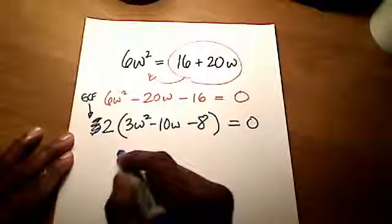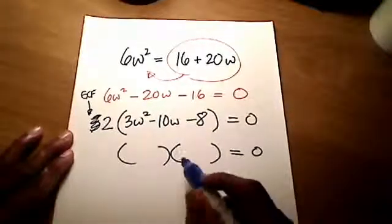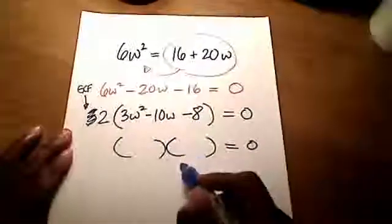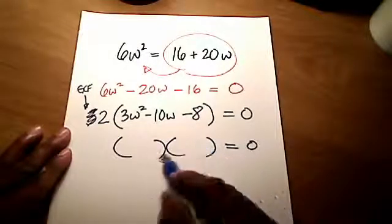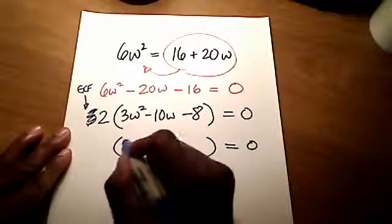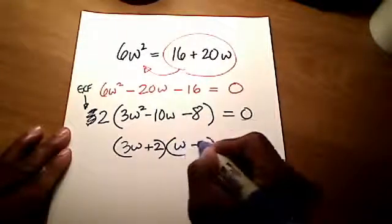and I've got this trinomial. This thing can be factored. Again, I'm not going to show you factoring right now. That's something that you should be able to learn, or probably already have learned on your own. You could do factor by grouping or guess and check. Well, it turns out the two factored forms are 3w + 2 and w - 4.